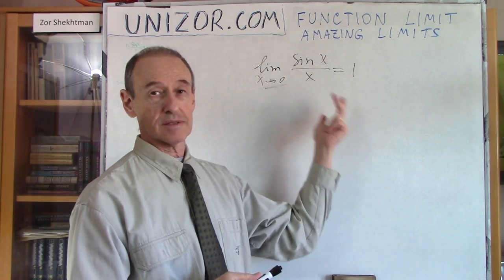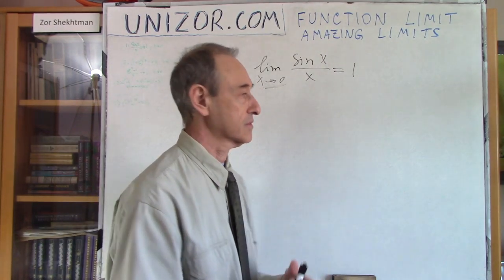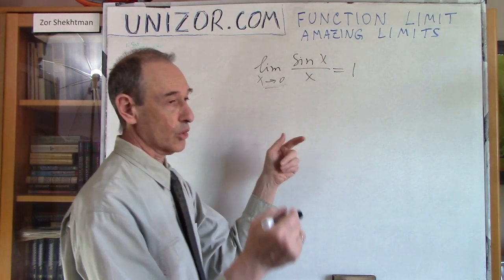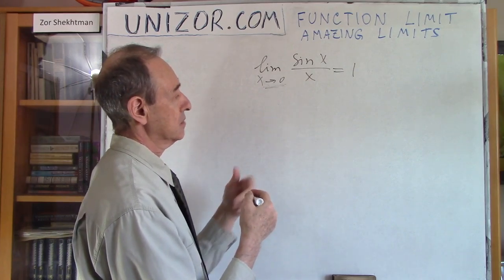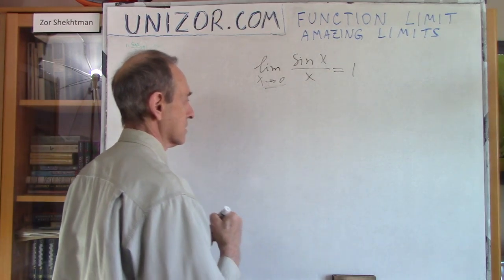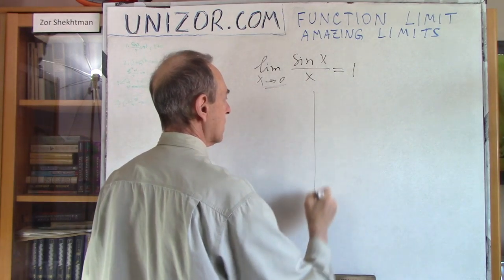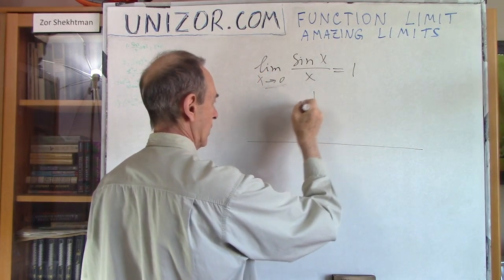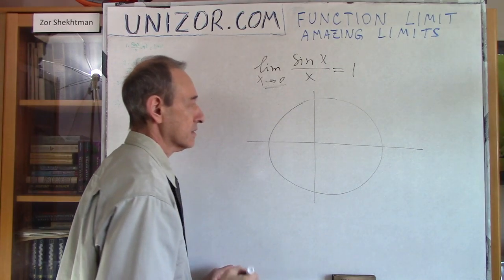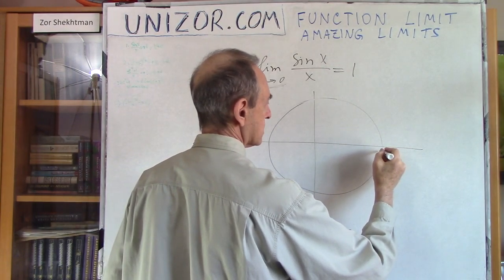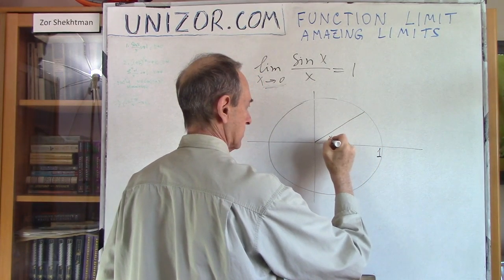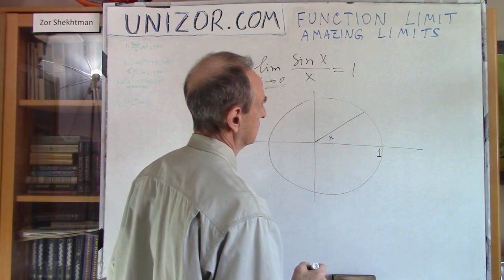Alright, so how can we prove it? The way I will prove it involves geometry and trigonometry. That's another reason why the whole thing is amazing — you see there is trigonometry, geometry, and function analysis, limits, etc. It's some kind of a symbiosis of different things together. So let me prove it. Basically, x can go to 0 in any fashion. In my proof, I will use positive x, but with a negative x it's exactly the same thing.